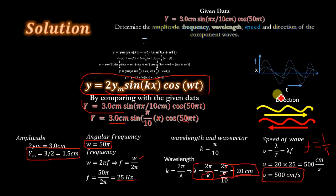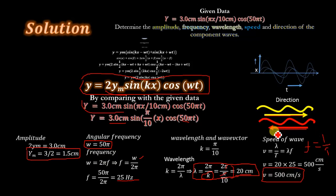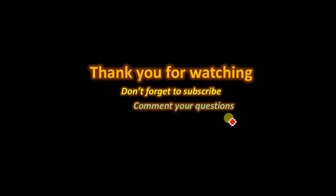As for direction, the two component waves travel in opposite directions — one in the positive direction and the other in the negative direction. Thank you for watching, and don't forget to subscribe to Easy Edu for more videos.